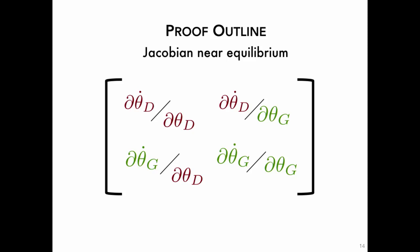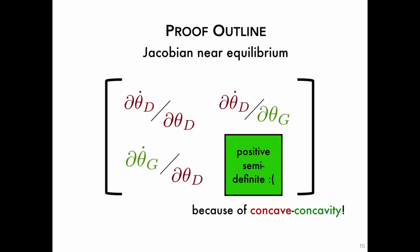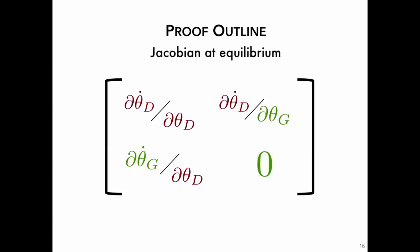Looking at the dynamics of a simple GAN system that learns a one-dimensional uniform distribution, with discriminator and generator consisting of only a single parameter each, the dynamics of the system are quite nonlinear. But from the theorem, it still converges as long as the system has been initialized sufficiently close to the equilibrium — there are no non-convergent dynamics near the equilibrium. Based on our analysis, we also propose a modification to the optimization procedure that provably enhances local stability: the generator should not only minimize the objective, but also minimize the norm of the objective's gradient with respect to the discriminator parameters. This can be thought of as a damping term in nonlinear systems terminology.